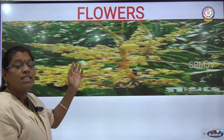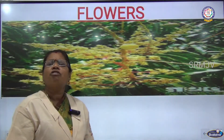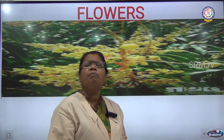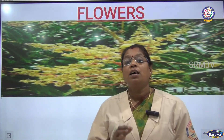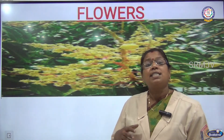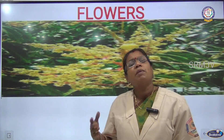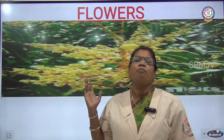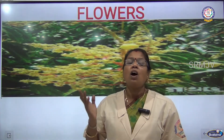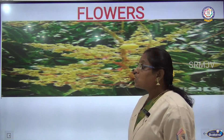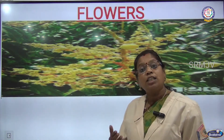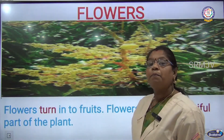Next are the flowers. Flowers are the beautiful part of the plant — we can see many types and many colors of flowers all around us. And slowly, flowers will turn into fruits.